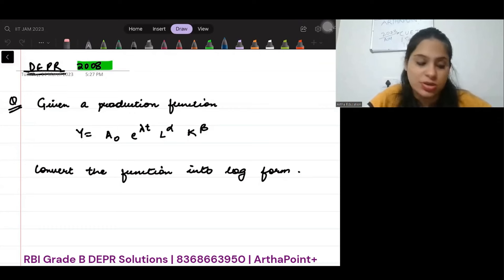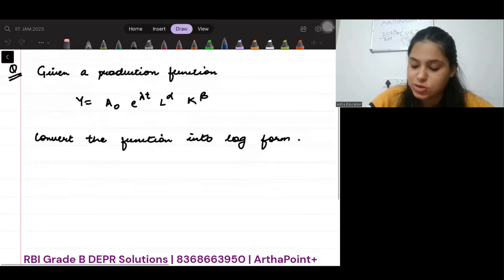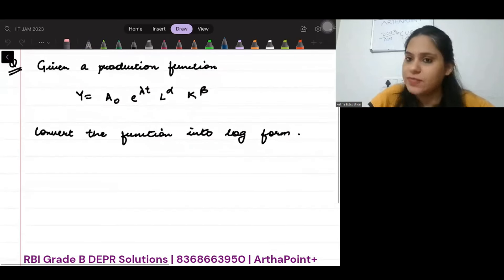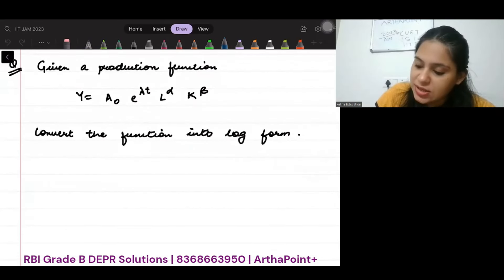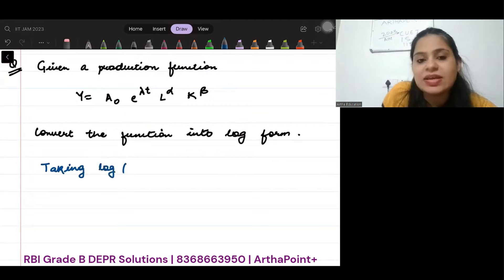This question came in DEPR 2008. It says, given a production function Y = A0 e^λt L^α K^β, convert the function into log form. Let's convert. It's very easy to see. Whenever we take log, we always take it to the base e. So, taking log on both sides.